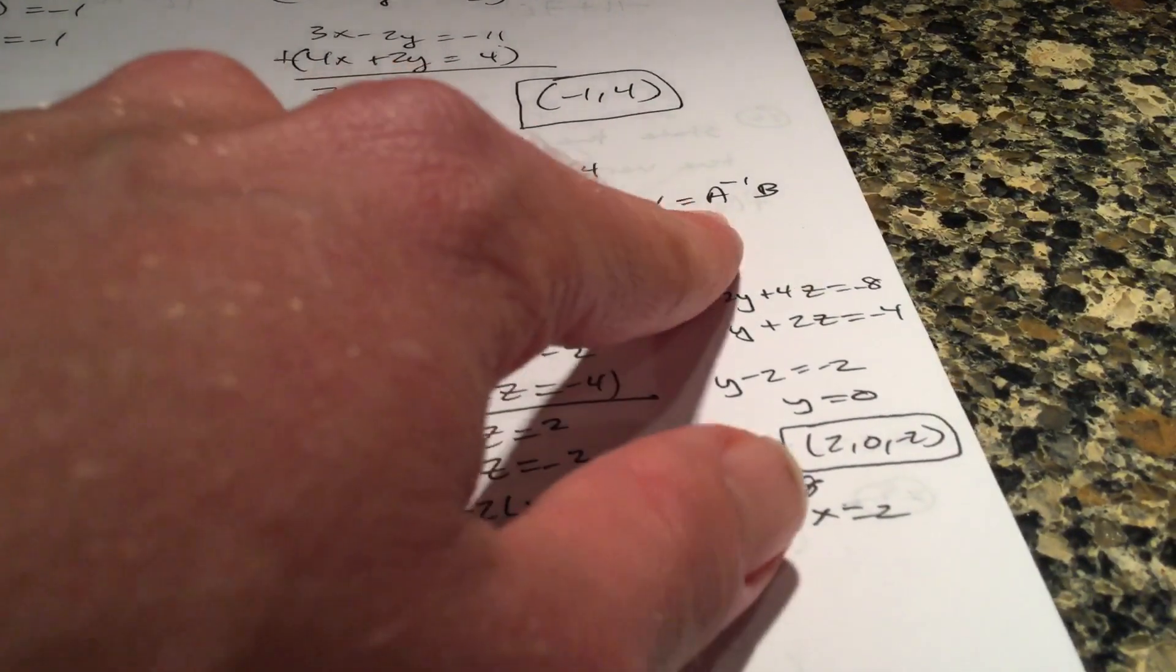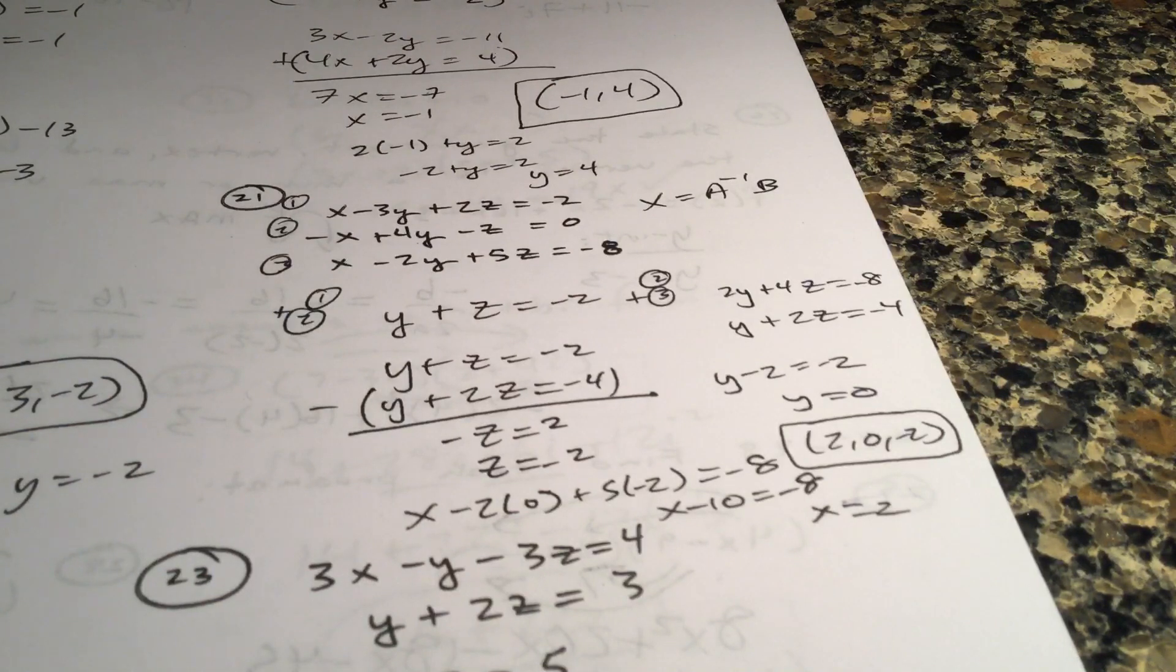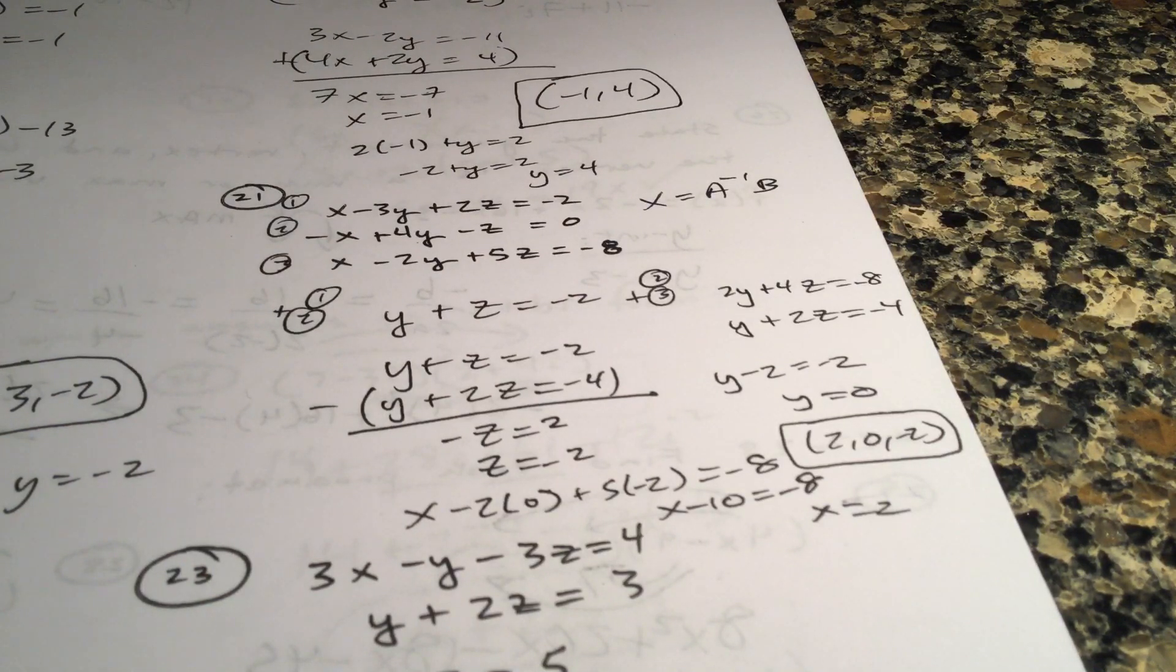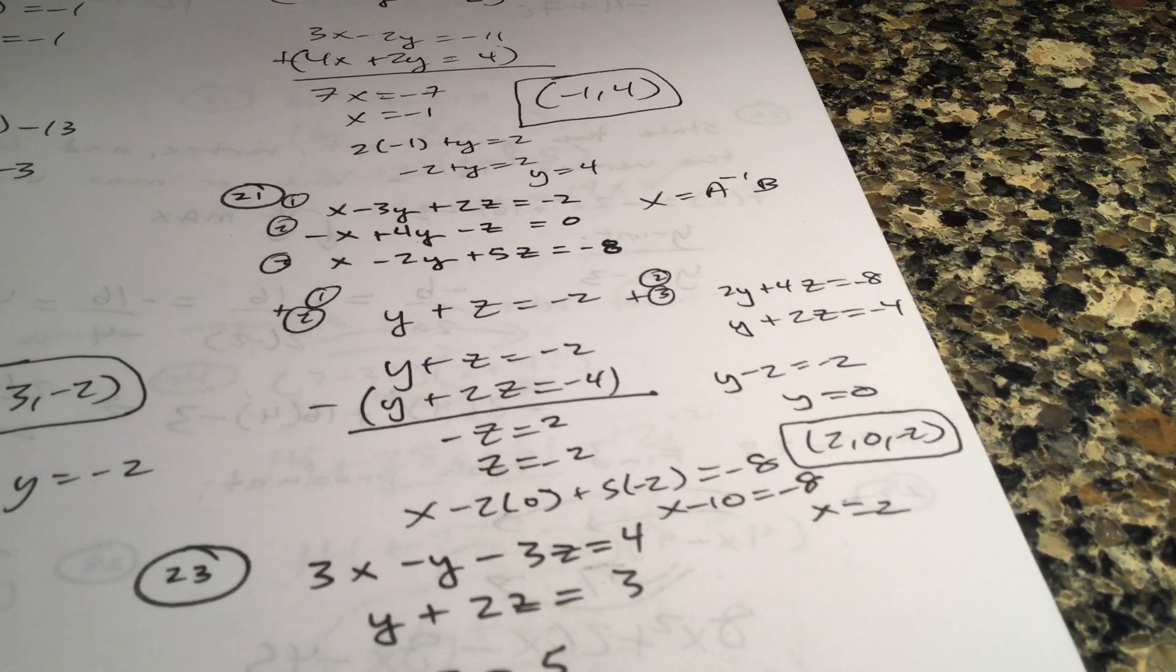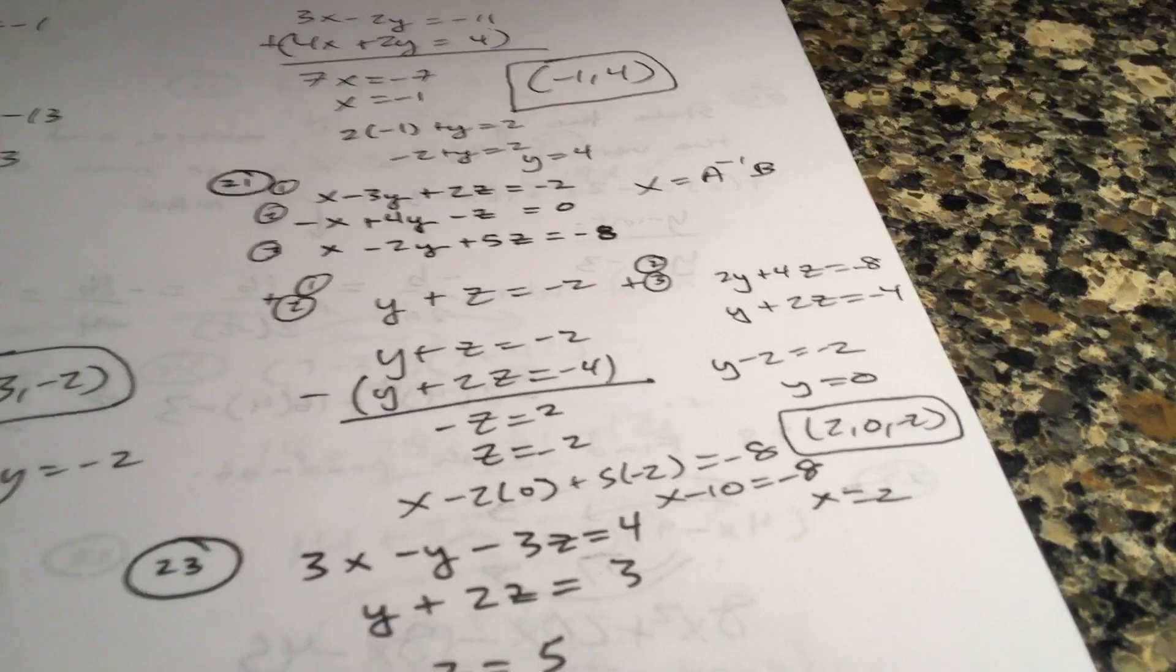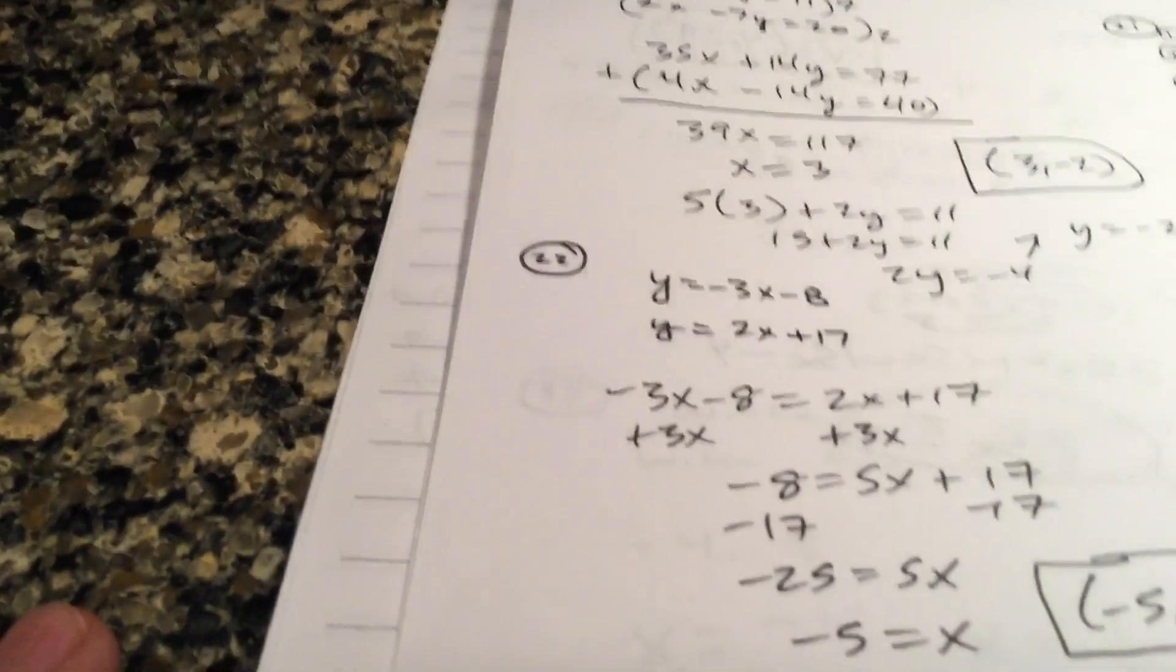Here, guys, you can do x equals A inverse B. A lot of you guys check that. You got two, zero, negative two. I solved it three by three by hand, putting one and two, two and three together, and then doing elimination. Again, use your matrix, A inverse B, you'll get that same answer.